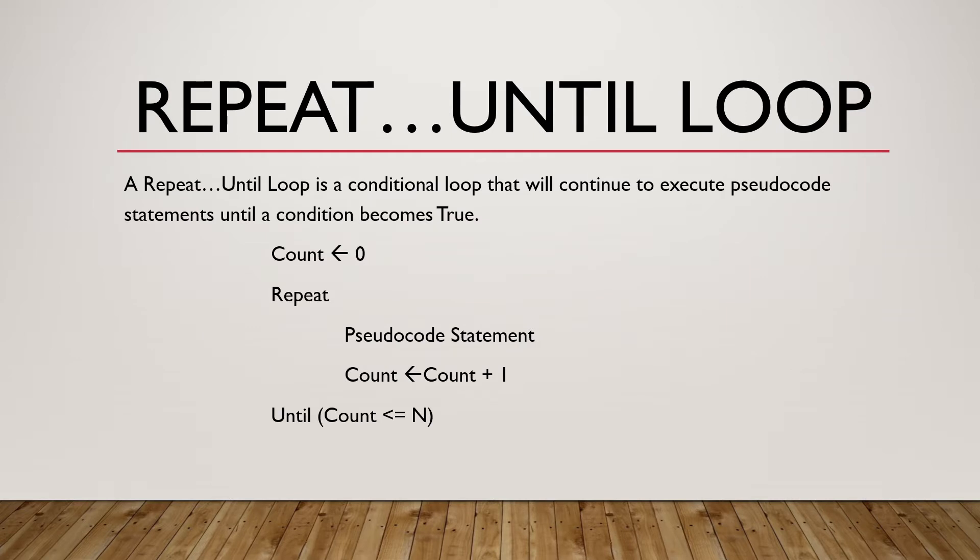The repeat until loop is a conditional loop that will execute pseudocode statements until the condition becomes true. So while the condition is false, the loop will continue. It's only when the condition becomes true that the loop will stop. In our repeat until loop, we'll have a count initialized at the start and is set to 0.